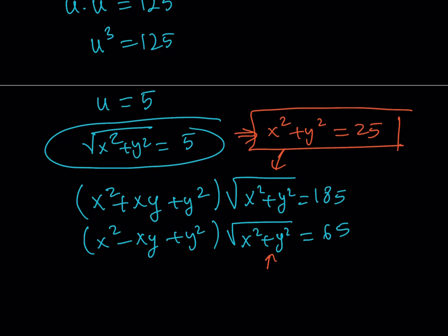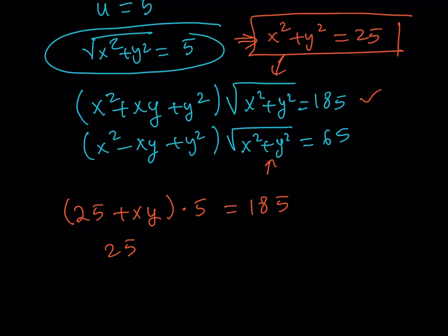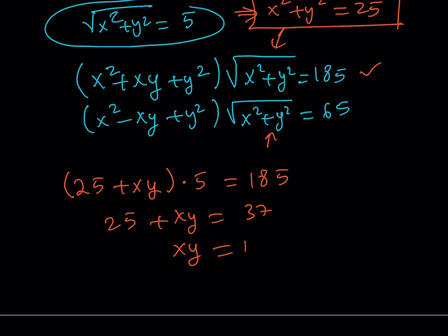Let me write down the original equations one more time. We know that x squared plus y squared equals 25, and the square root of x squared plus y squared equals 5. Substituting into the first equation: 25 plus xy, multiplied by 5, equals 185. Dividing both sides by 5 gives 37, so xy equals 12. Using the second equation would give the same result — 25 minus xy times 5 equals 65 — so it wouldn't matter which equation you use. So now I have xy equals 12.